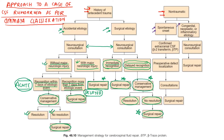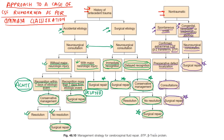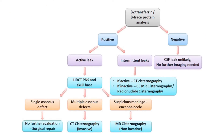Non-traumatic CSF rhinorrhea can be of spontaneous onset or of other causes like congenital, neoplastic, or inflammatory etiology. If it is of spontaneous onset, the nasal secretion has to undergo biochemical analysis for beta-2-transferrin and beta-trace proteins to confirm that it is CSF. Then pre-operative defect localization is done with intrathecal dye injection, and the patient should undergo surgical repair of the leak.